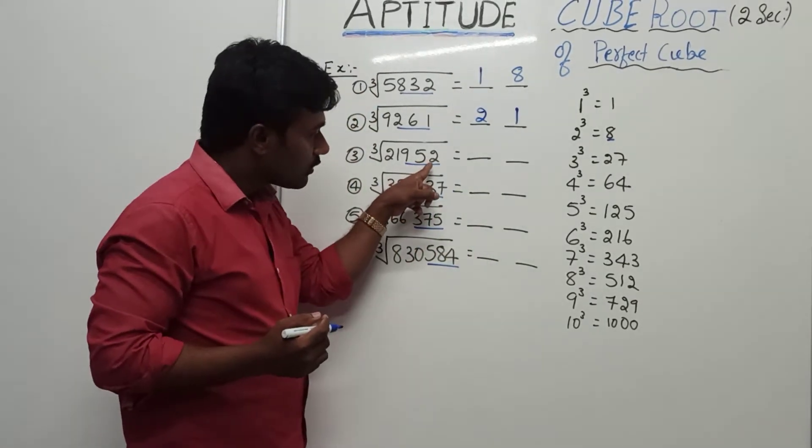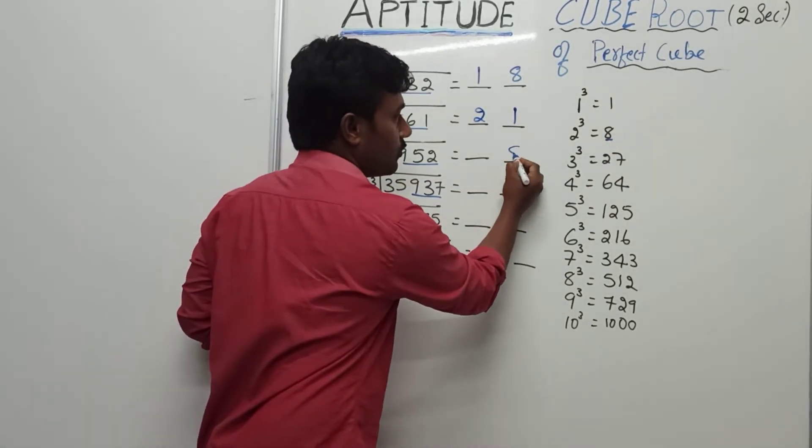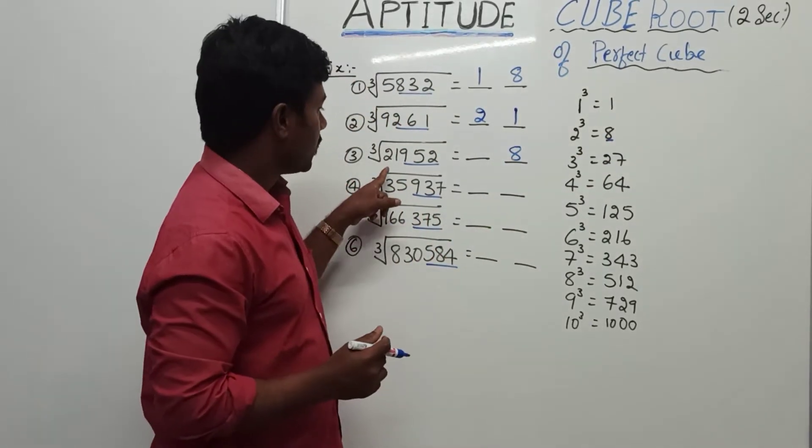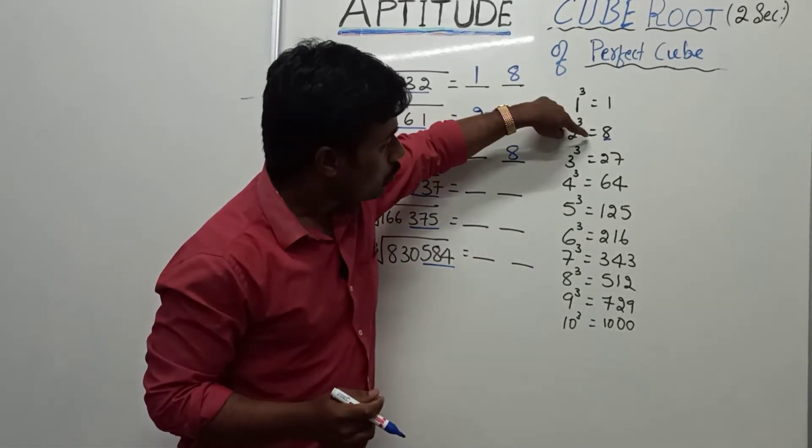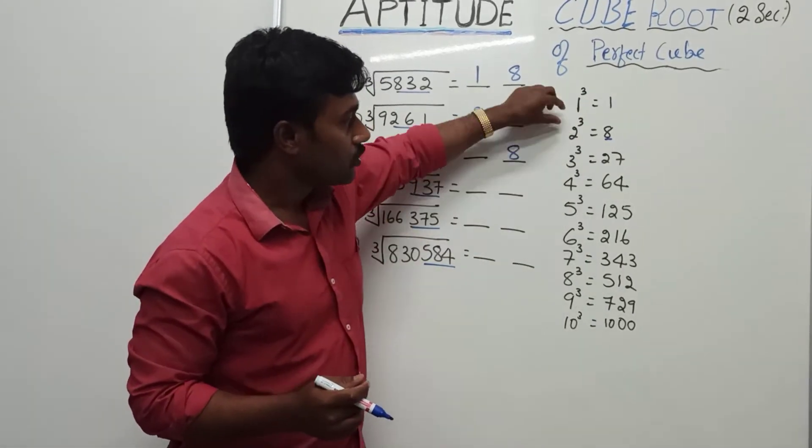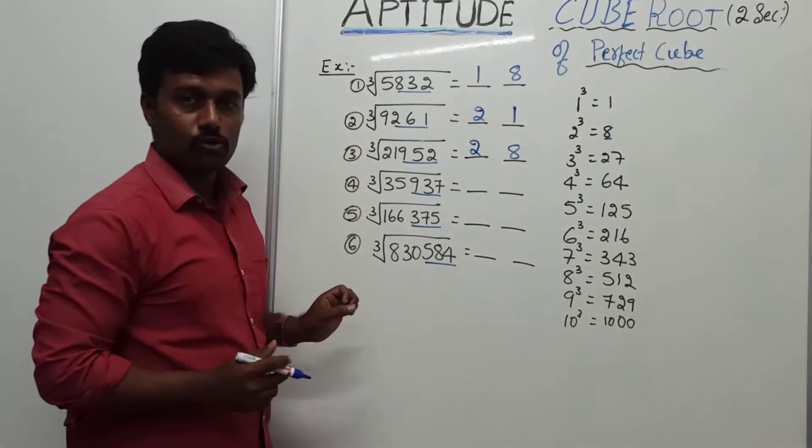Next, here, cube of 2. Cube of 2 is 8. Write in the unit case, 8. Then come to 21. 21 lies between 2 cube and 3 cube. So here, we should consider this, 2. 28 is the cube root.